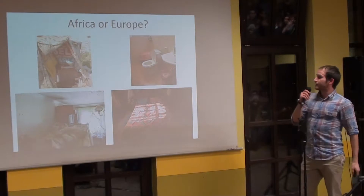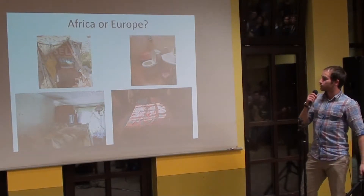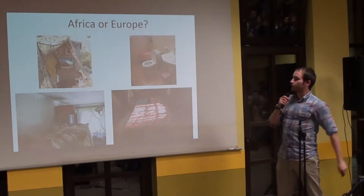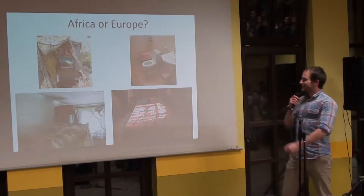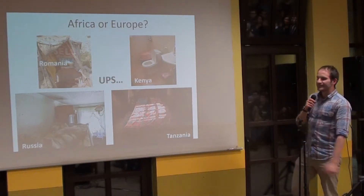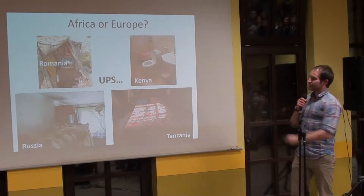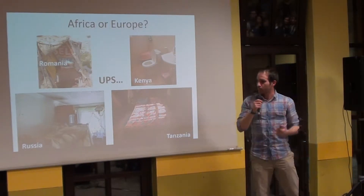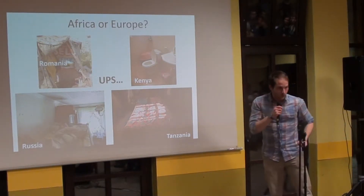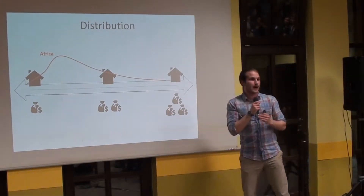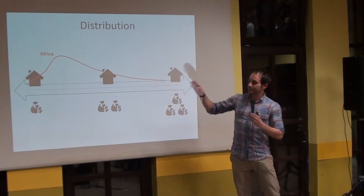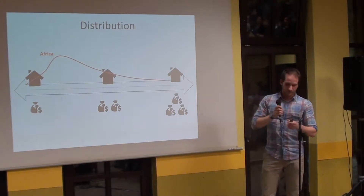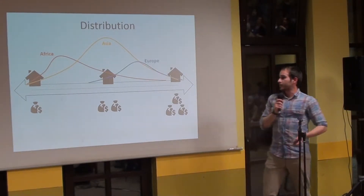So now this challenge: Africa or Europe — what is what? Is the left Africa or Europe, or the right Africa or Europe? This is Kenya, and this is Tanzania, and this is Romania, and this is Russia. Of course, it's not the whole truth. This is more or less how the street would be distributed. You will have some African people on the very right side, but most of them will be more to the left of the middle. This is for Asia, and this is for Europe.